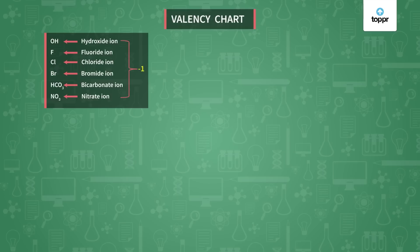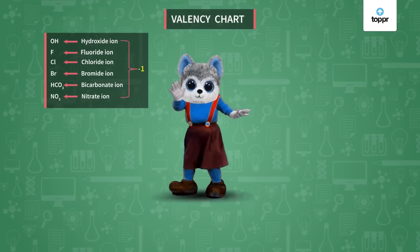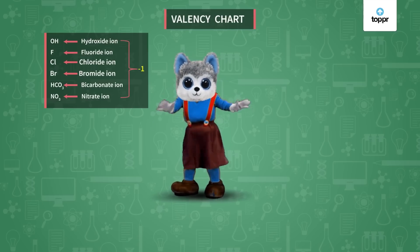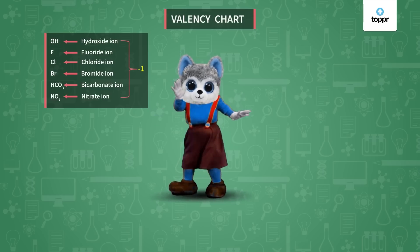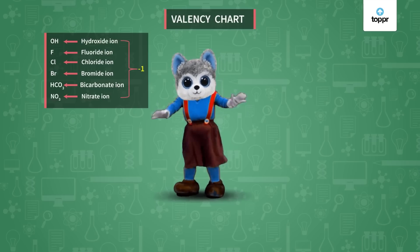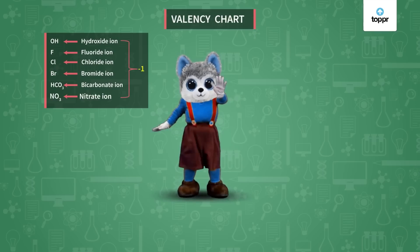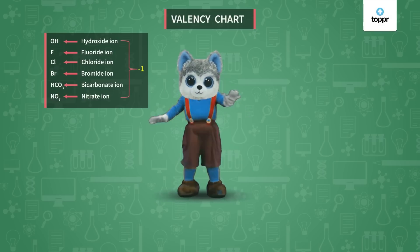Now how do we learn that the entire group has valency 1 and its members? There is a tune of the poem 'Mary Had a Little Lamb' and we are going to sing this group in a similar manner so that we can learn the valency. The song goes like this: Hydroxide, fluoride, chlorobromide, chlorobromide, chlorobromide, hydroxide, fluoride, chlorobromide, bicarbonate, nitrate — their valency is 1.